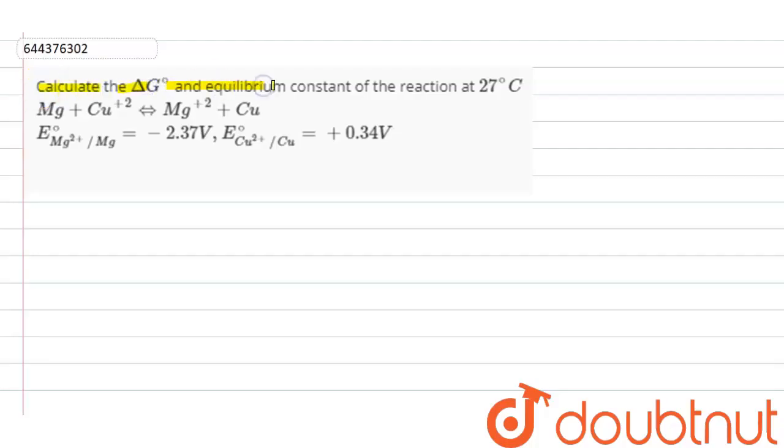G naught and equilibrium constant of the reaction at 27 degrees Celsius. The reaction is: Mg + Cu²⁺ ⇌ Mg²⁺ + Cu. The E⁰ values of magnesium and copper are given in the question.